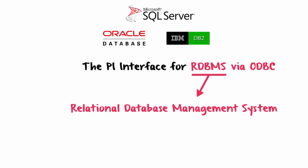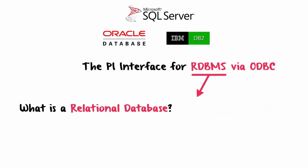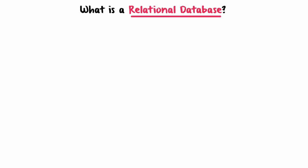Some of you might be thinking: RDBMS, ODBC — what is all this stuff? Let's start with what is a relational database. First, a database is just a collection of data that is organized. A relational database is data that's organized in tables, which have relationships.